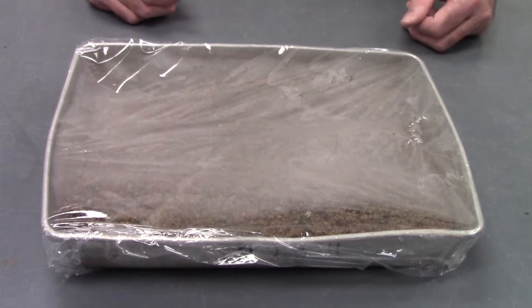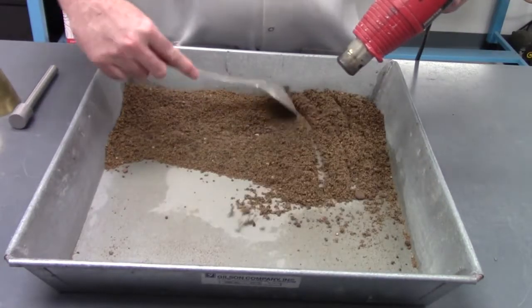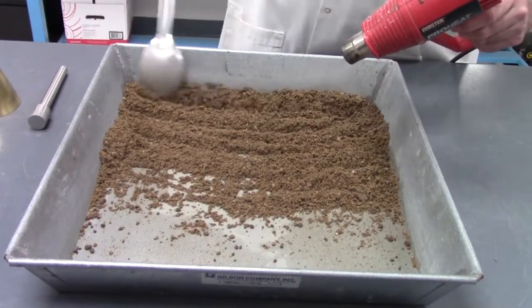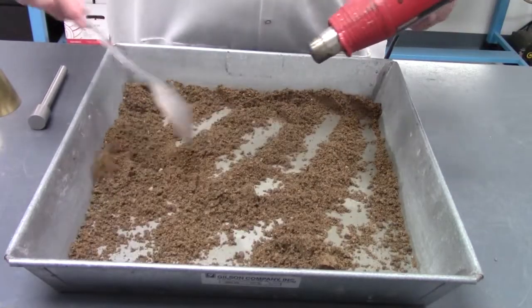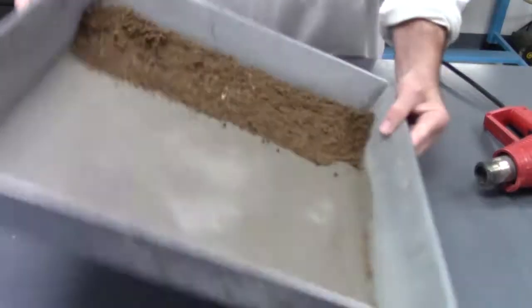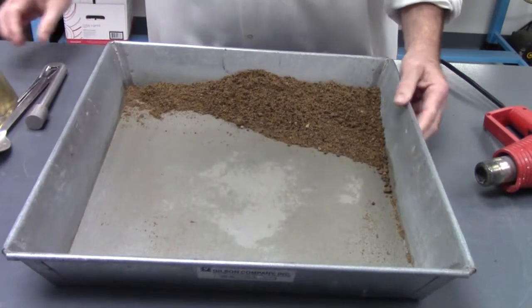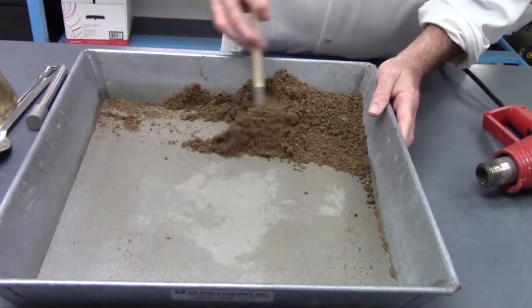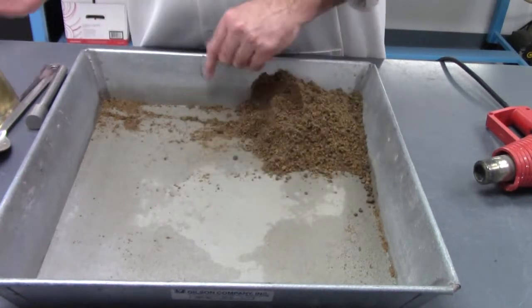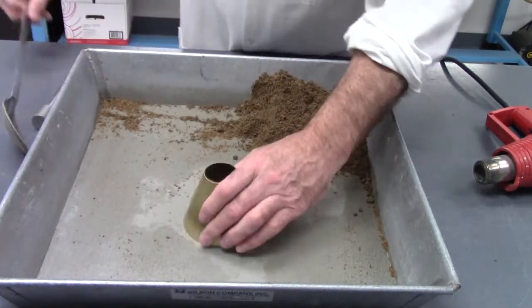You need to spread your sample on a flat, non-absorbent surface and expose it gently to warm air. You want to dry this material until you get what is considered a free-flowing condition, like dry sand.